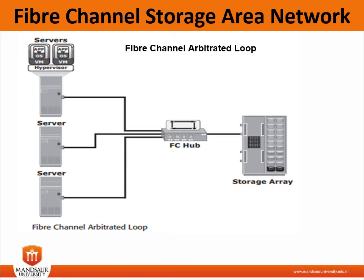APC-IL can support up to only 127 devices on a loop. One address is reserved for the optionally connected loop of the APC switch port, so up to 126 nodes can be connected to the loop. Adding or removing devices results in a loop reinitialization, which causes a momentary pause in loop traffic.